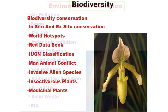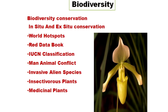The next topic is Biodiversity. In this chapter, we study biodiversity conservation, types of conservation like in-situ and ex-situ conservation, world hotspots, the Red Data Book, IUCN classification, man-animal conflict, invasive alien species, insectivorous plants, and medicinal plants. Anthropogenic changes cause disruption and damage to biodiversity.